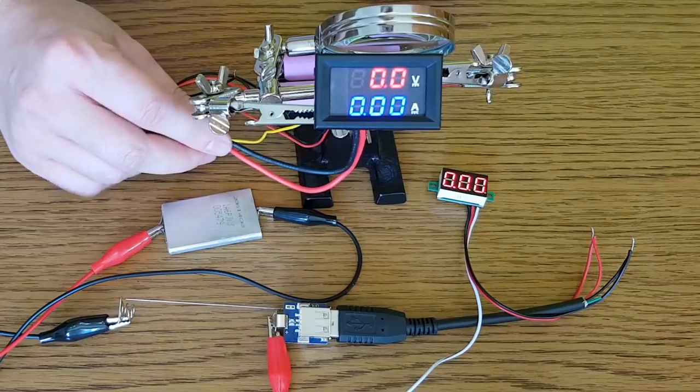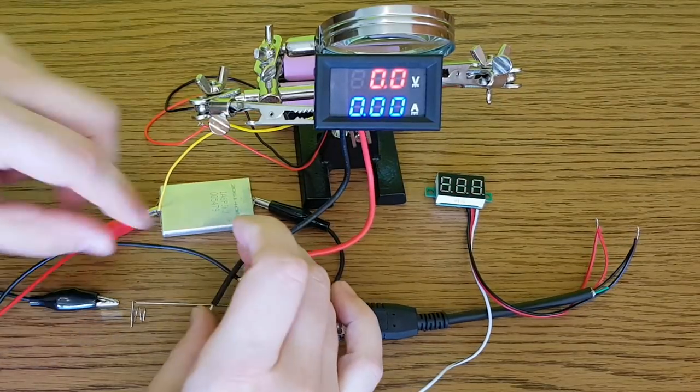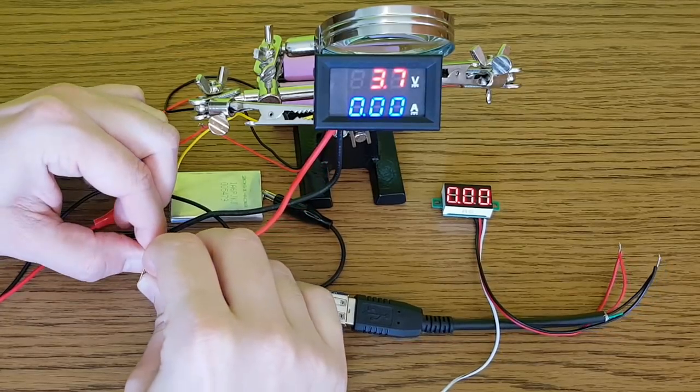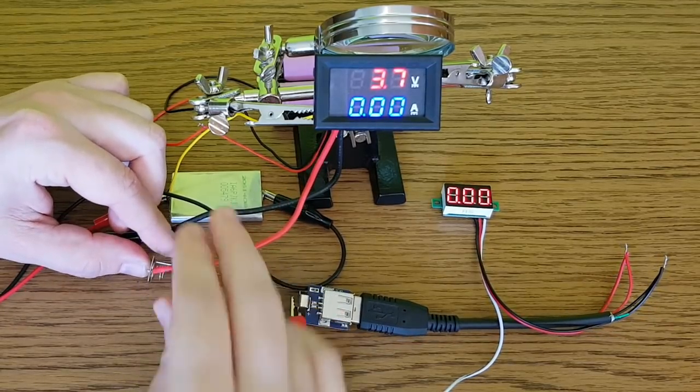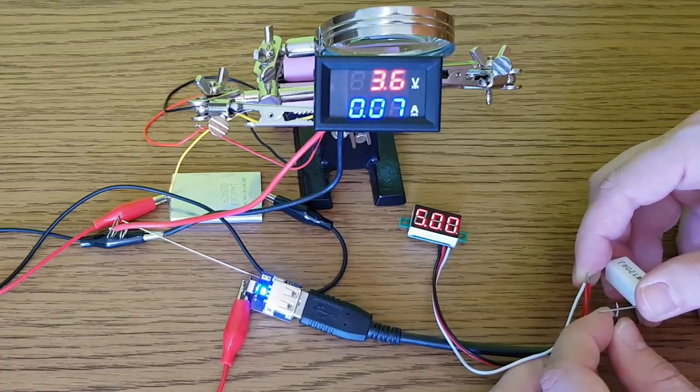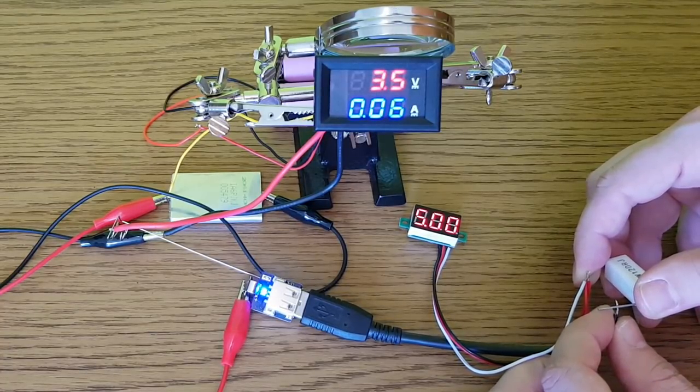Let's do another useless test. How much current from the lipo cell it's used by the boost converter plus the voltmeter? The same, less than 10 milliamps. But if we connect the dummy load, it powers on and it's using up to 80 milliamps.